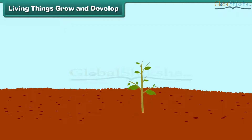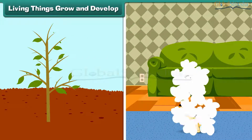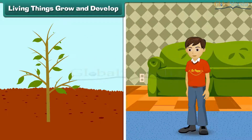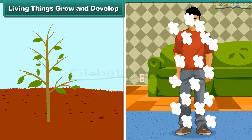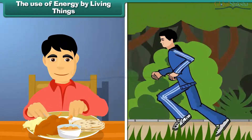Living things grow and develop. All organisms grow and develop. Growth results in an increase in size, weight, and synthesis of new protoplasm. In animals, growth is limited to a certain age, while plants grow throughout their life.